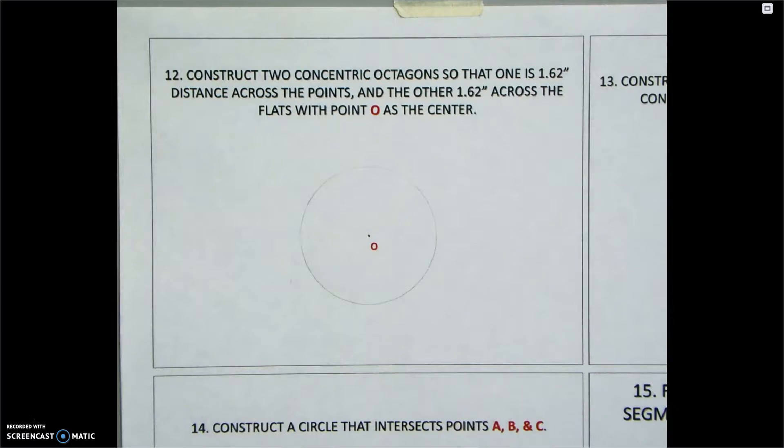So an octagon has eight sides. When you divide 360 by 8, you wind up with 45 degrees. So that's the triangle that we're going to use for this. I need my 45-90 triangle and my T-square in order to solve this problem.